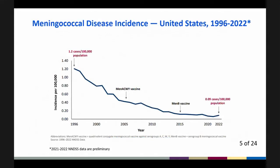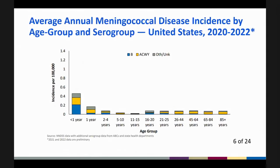This slide depicts the incidence of meningococcal disease in the United States from 1996 through 2022. Note that the incidence started to decline before the introduction of MenACWY vaccine in 2005. There is an uptick in disease incidence in recent years. The proportion of disease caused by serogroup varies with age, as depicted here for 2020 through 2022, during the COVID pandemic.